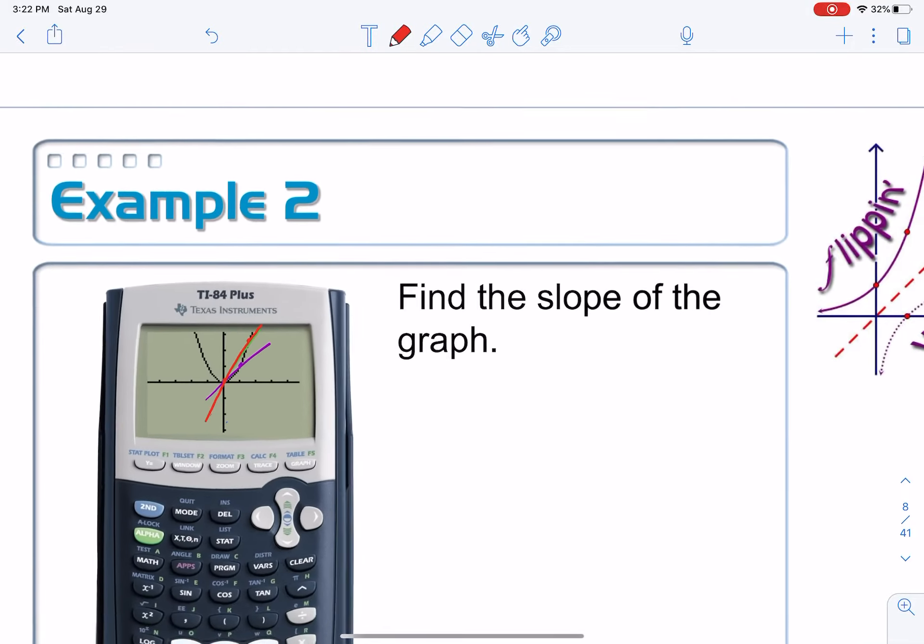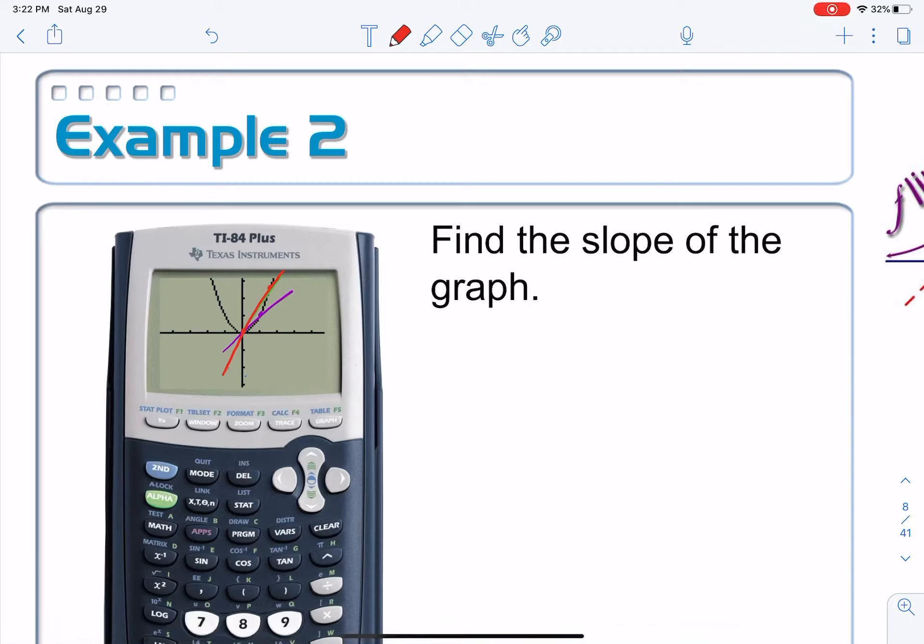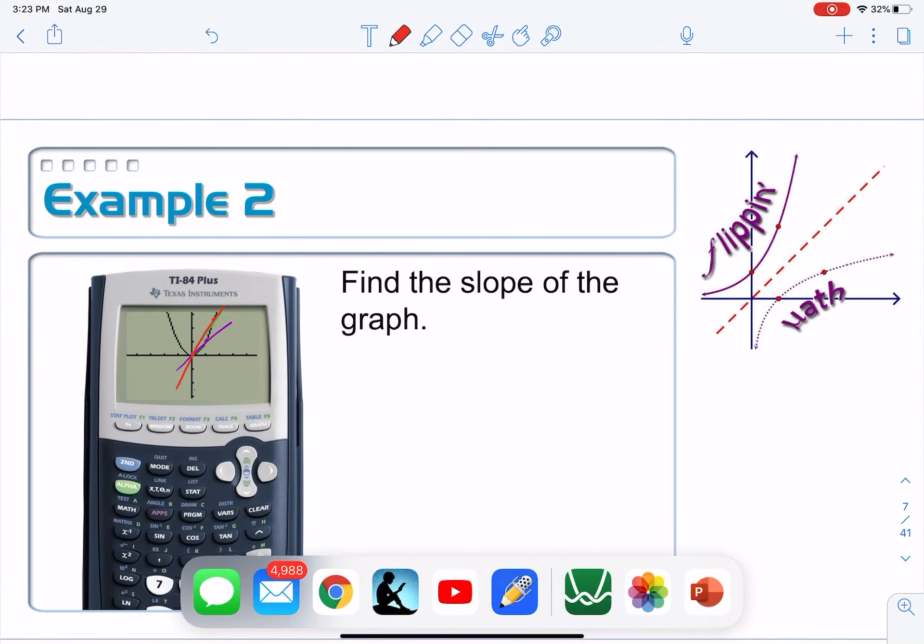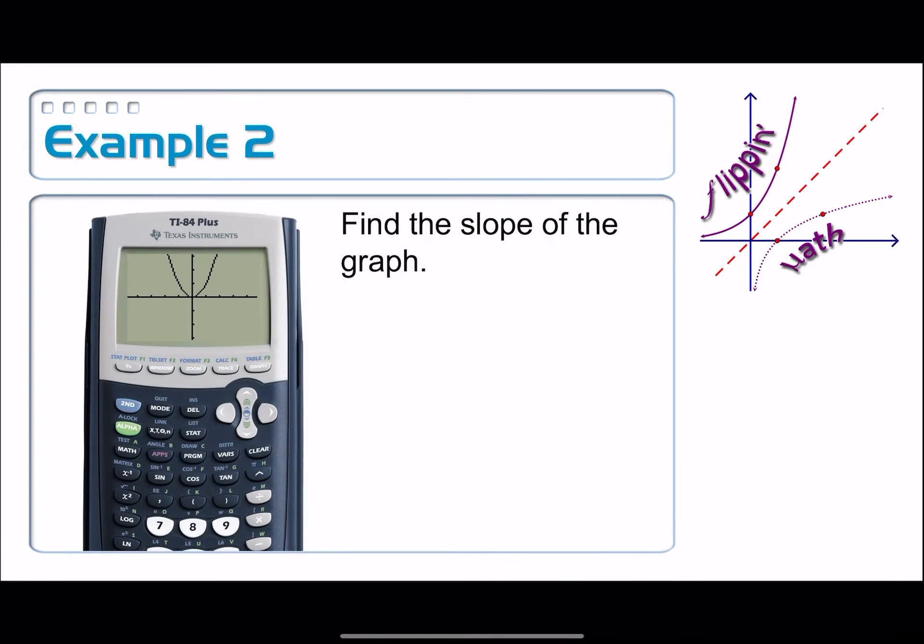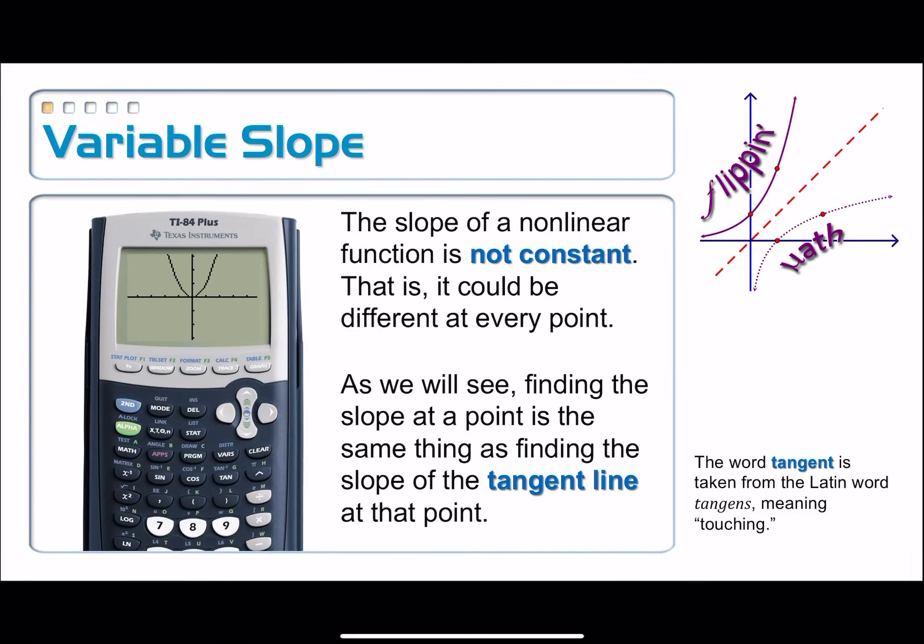All right. So now we can definitely visualize the fact that the slopes between these two lines are not the same. So this is not a question that we can answer. Find the slope of this graph. It's not a number. It's not a particular number. It is something that is variable, is constantly changing. And that idea, that thing, as we will see in the next unit, is called a derivative. Okay? So this thing has a variable slope. The slope of a nonlinear function is not constant. What that means is that it could be different at any particular point. It's controlled by a function. That function is called a derivative.